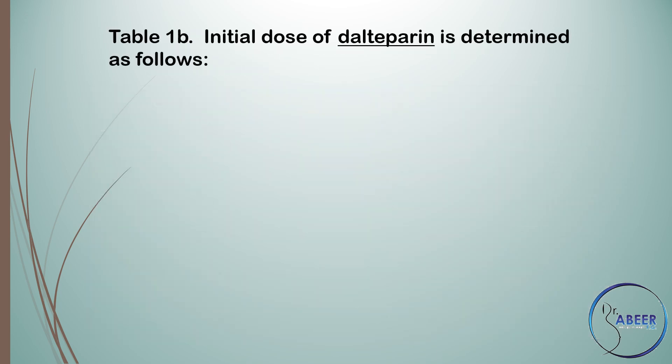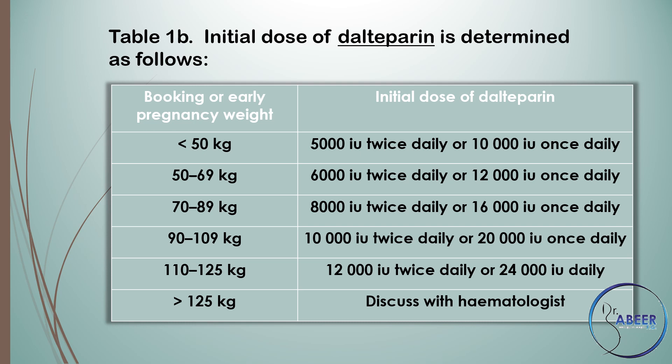Table 1B: Initial dose of dalteparin determined by booking or early pregnancy weight. Less than 50 kg: 5,000 units twice daily. 50–69 kg: 5,000 units twice daily. 70–89 kg: 8,000 units twice daily or 16,000 units once daily. 90–109 kg: 10,000 units twice daily or 20,000 units once daily. 110–125 kg: 12,000 units twice daily or 24,000 units once daily. Greater than 125 kg: should be discussed with a hematologist.